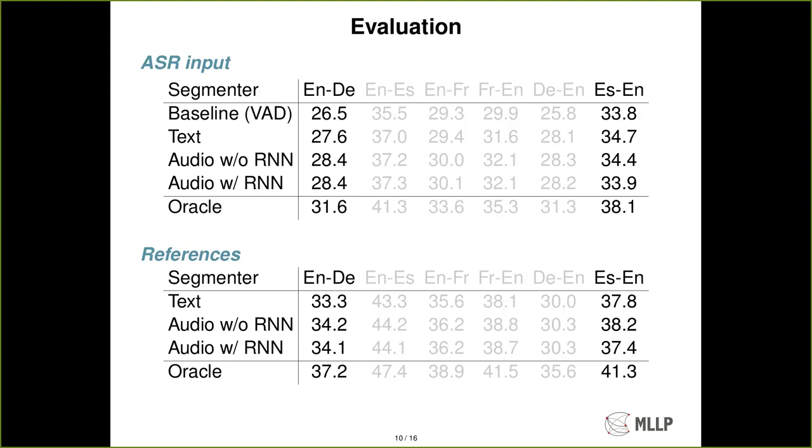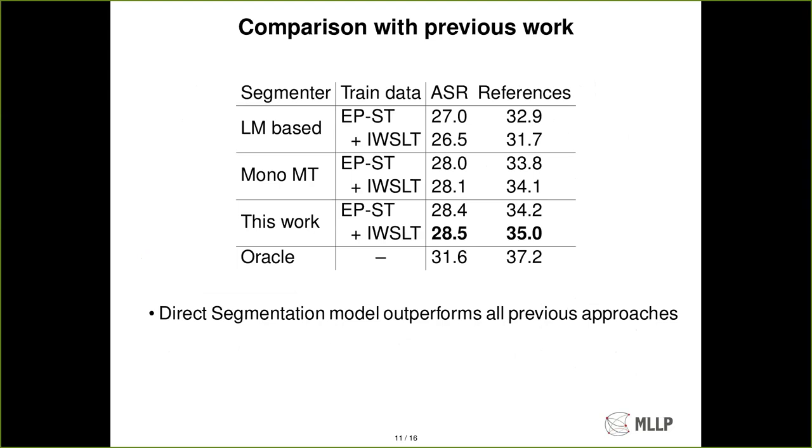Now we show a comparison with previous work. You can see how the language model segmentation works. In this case for the language model the additional text data does not improve performance. Then we have the monolingual MT approach where there is an improvement using text data. And then we have this work, the direct segmentation model which across all settings obtains improvement over the previous literature. We get improvements from using the reference, we get improvement from additional text data and we stay at around two points lower performance than the oracle segmentation.